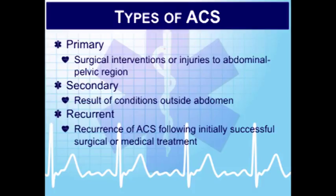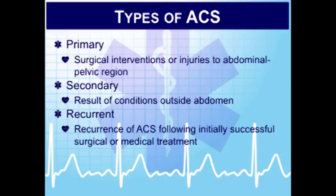Abdominal compartment syndrome comes in three types: Primary, requiring surgical intervention; Secondary, caused by conditions outside the abdomen such as sepsis or burns; and Recurrent, where ACS was initially successfully managed but develops again. Monitoring intra-abdominal pressure can prevent complications. It is important for CCTPs to maintain proficiency in interpreting these images in collaboration with the physicians they receive report from, and we must always ask for copies of all imaging and results.